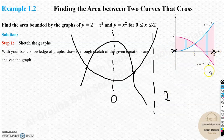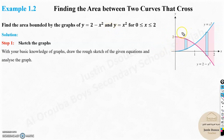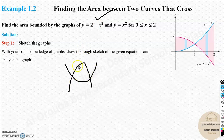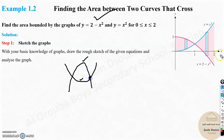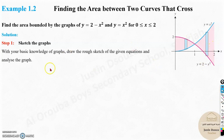Now you don't need the entire graph — only from 0 to 2. From the rough graph, the upper function initially is the downward one (minus x squared), and the positive parabola is lower. But since the graphs cross, eventually the upper function will change. Until the intersection point, use one formula; after it, swap the upper and lower functions.